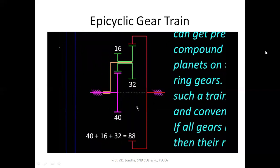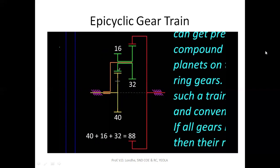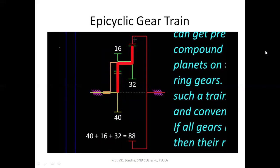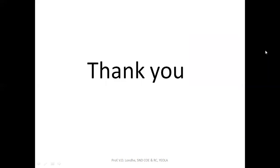A schematic cross-sectional side view is used to represent complex epicyclic gear trains. In this schematic, the sun engages with a compound planet mounted on an arm. On the other side the planet engages with the ring gear. This diagram also helps calculate the number of teeth: the sun has 40 teeth, the planet adds 16, and the other side of the planet adds 32 more, giving the ring gear 88 teeth.